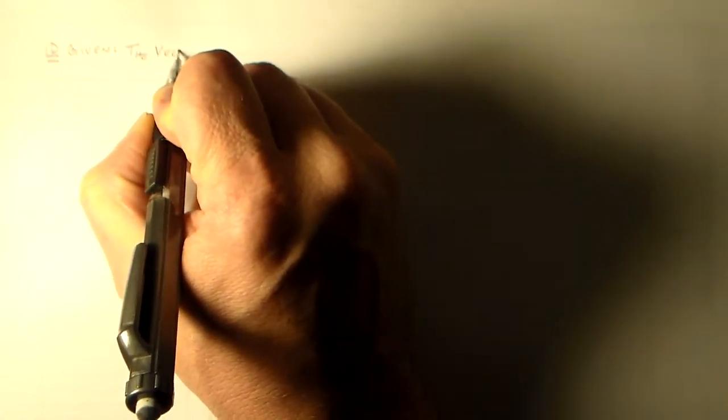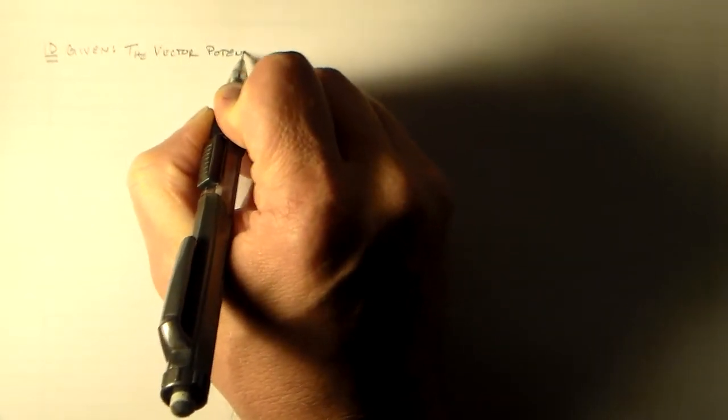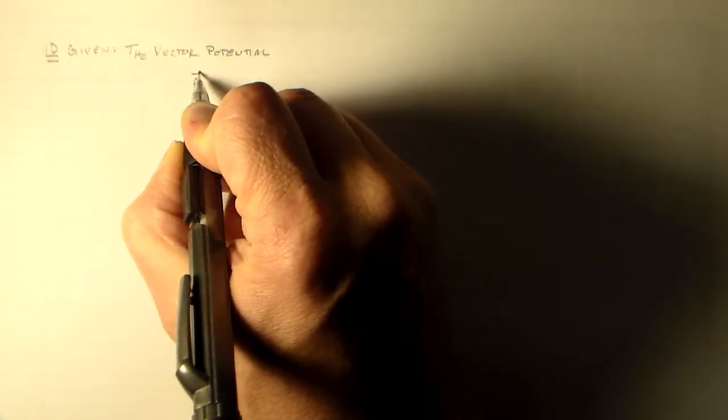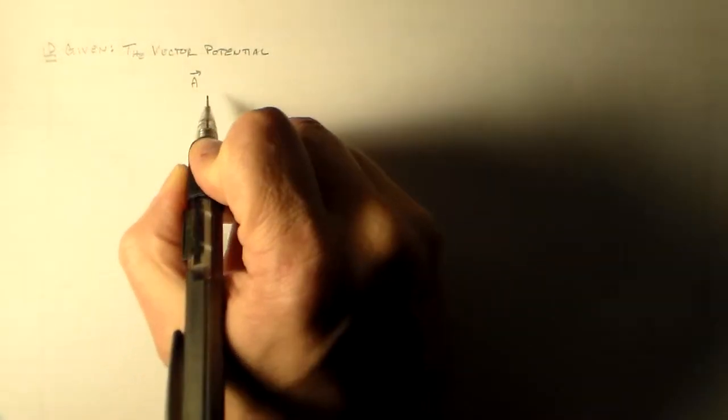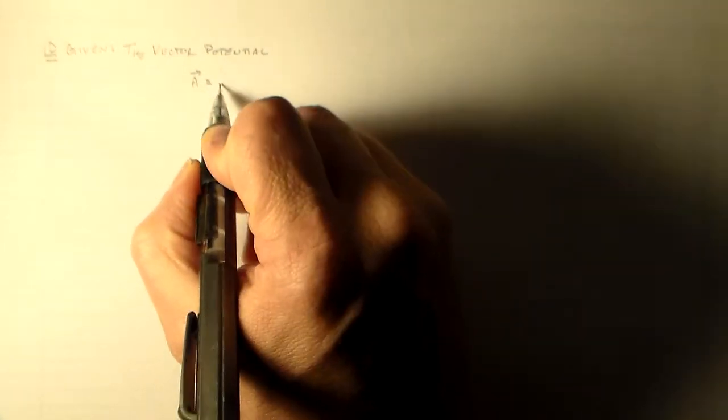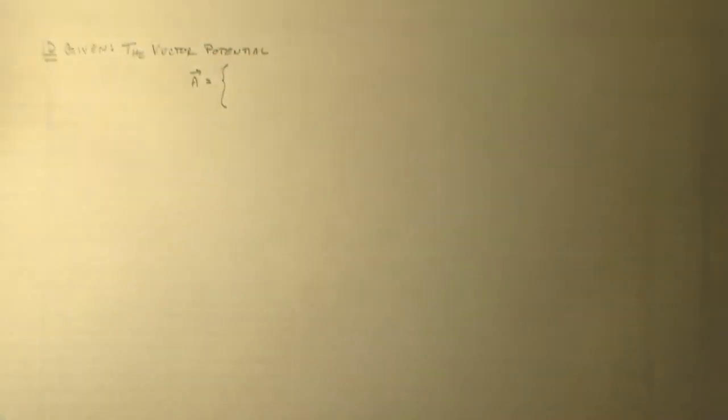But I want to look at something like this, where we're given a vector potential A. And I want to figure out, well, what is the current density that makes it, right?